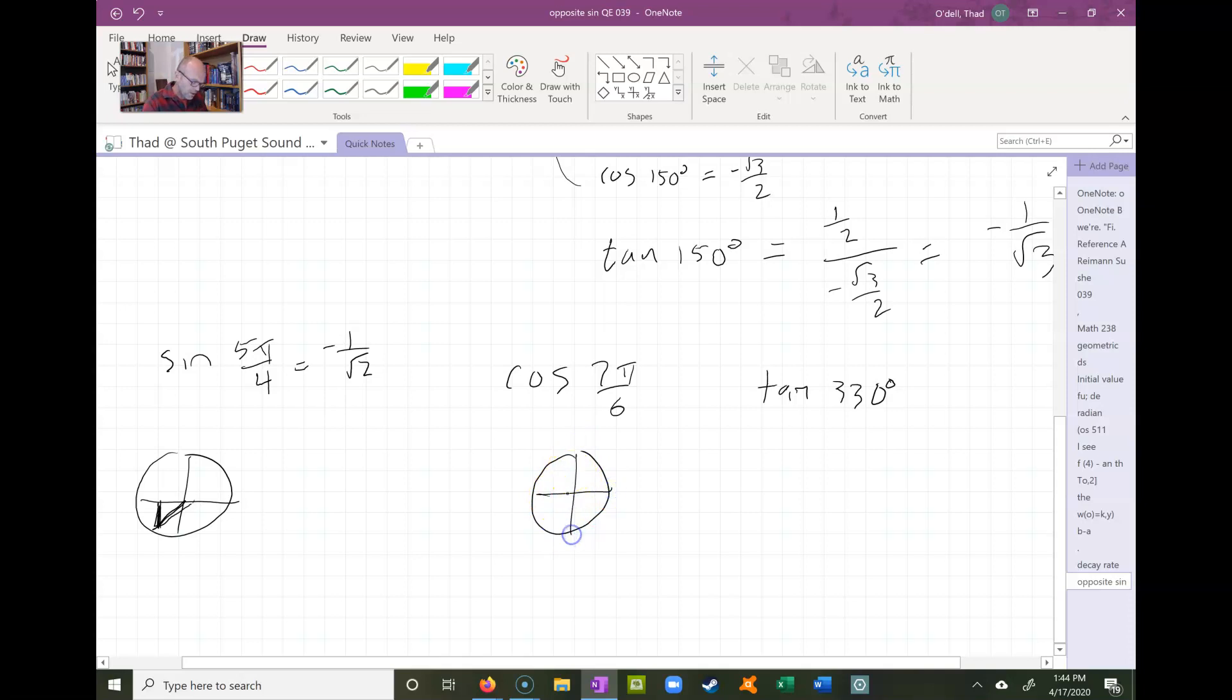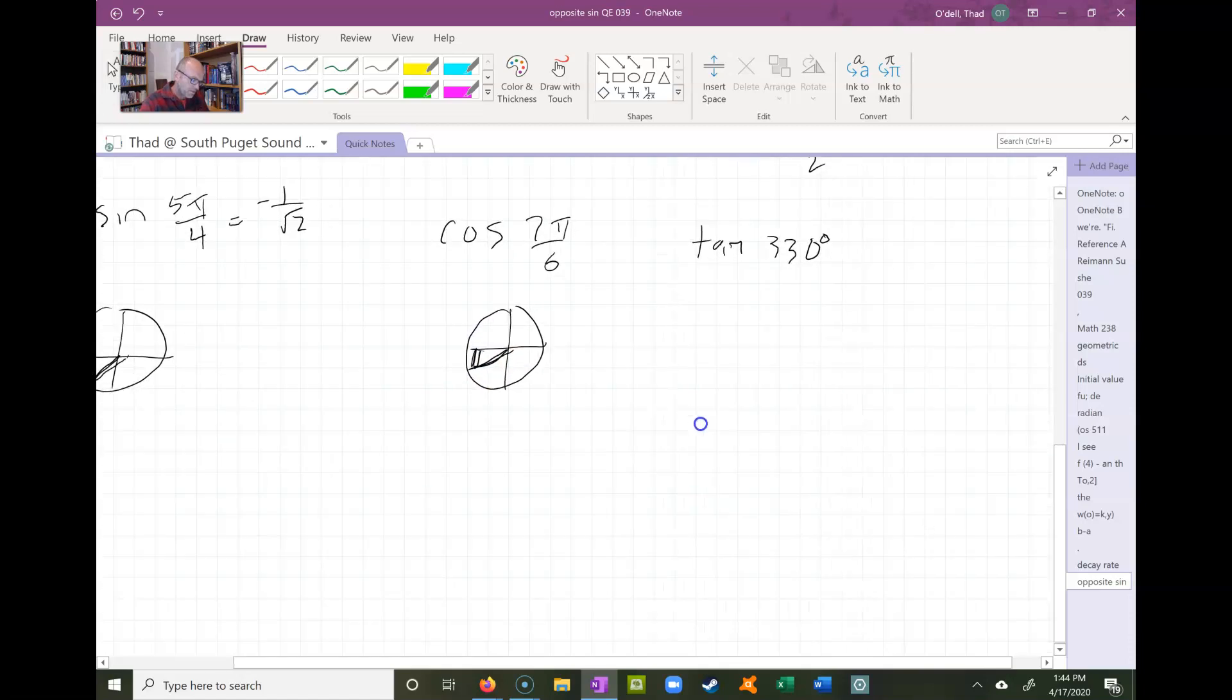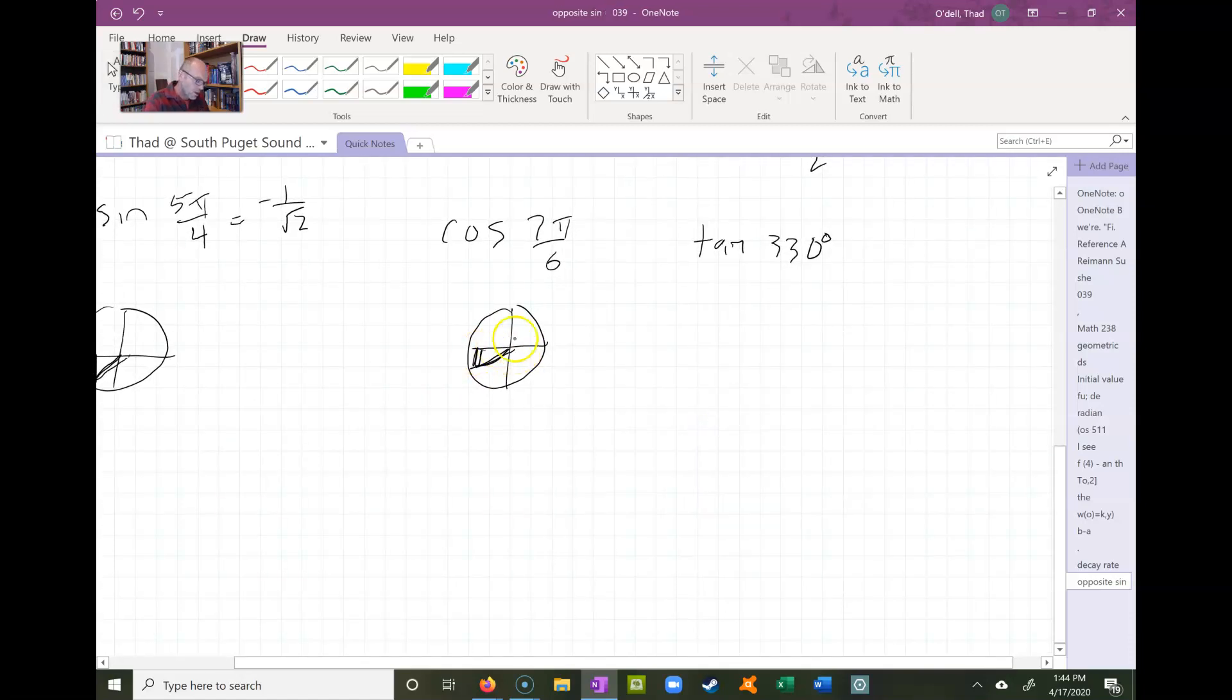For the cosine of 7π/6, I swing around here and 7π/6 is a little bit past π, so that'd be right in there somewhere. And that's a 30-60-90 triangle, and so I know the cosine is the long leg. So this would be √3 over 2, and since I'm going to the left it must be negative, so put a little negative there.